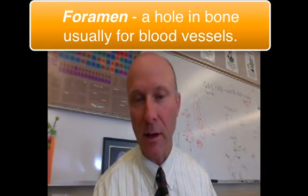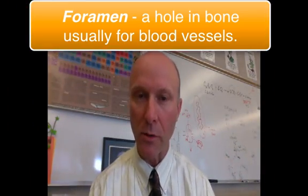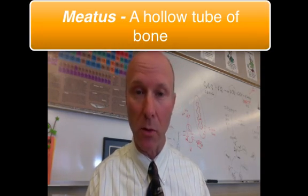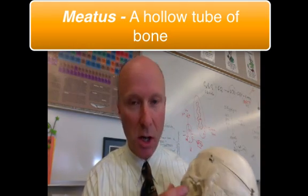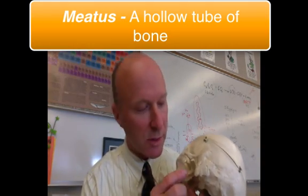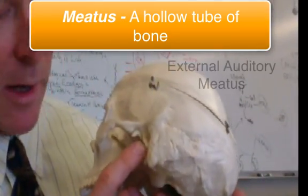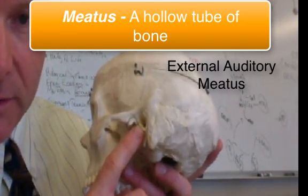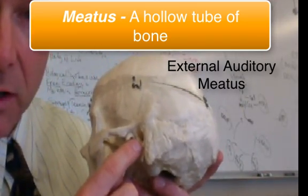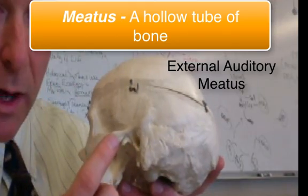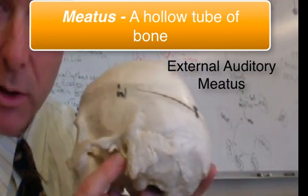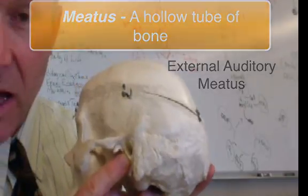Any foramen is a hole in bone that allows blood vessels to penetrate the bone. A meatus is another hole in bone, but a meatus is a long, tunnel-like tube of bone. You've got the external auditory meatus — that's for the middle ear, to allow sound to travel into the inner ear for you to hear.